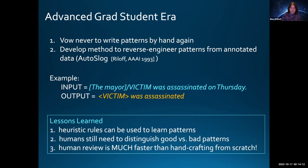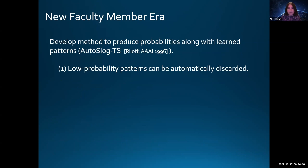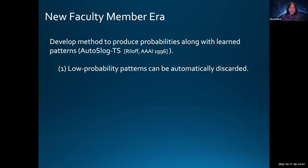Eventually I graduated and became a faculty member. In the back of my mind, I still had this idea that we should probably have some statistics to go with our rules, because it was actually quite hard to judge how effective a rule would be just by looking at the pattern in isolation. That led to the next model, called AutoSlog-TS—AutoSlog the Sequel—where I generated a pattern and applied it to the corpus again.